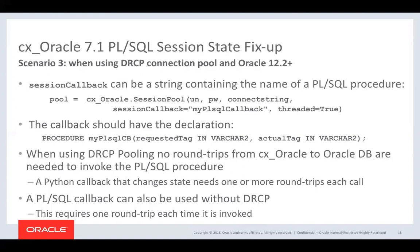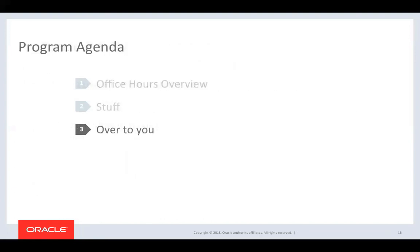The key takeaway is that Oracle will try its best to give you a connection that already has the tag you want. If it can't, your callback is called and it's up to you to parse and set that state. Overall, this gives greater efficiency because your callback is not called as many times as if you did it manually after every acquire call.